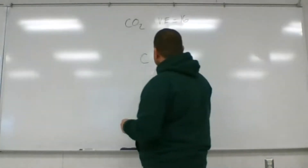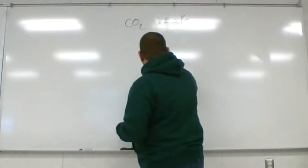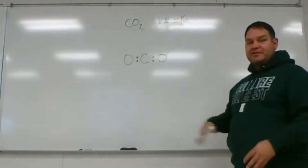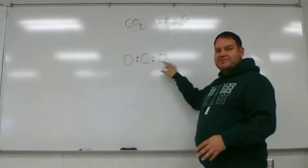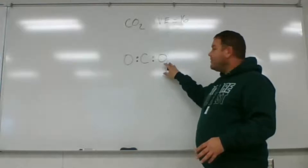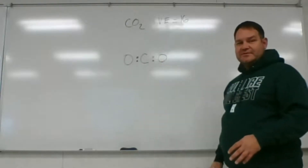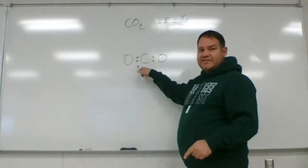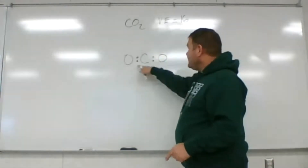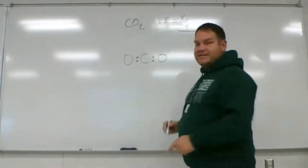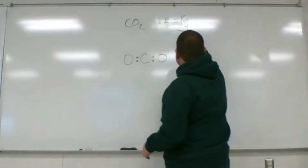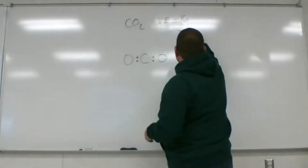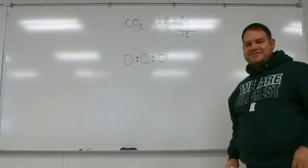Carbon will always be a central atom — it is essentially the element in 90% of molecules most deficient in electrons, which is why in DNA, proteins, carbohydrates, and fats, carbon is everywhere and always central. Step three: make covalent bonds with both oxygens around carbon. Step four: I've used four bonding electrons, so 16 minus 4 leaves 12 electrons remaining.